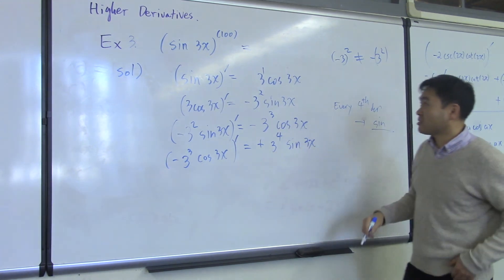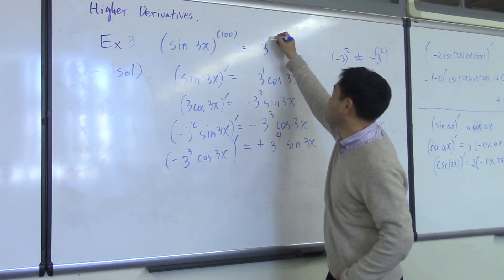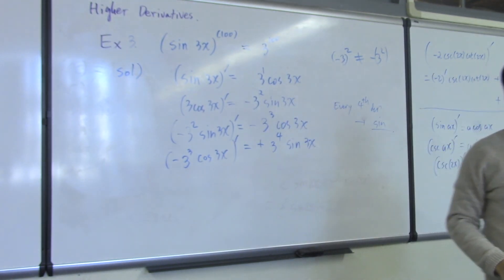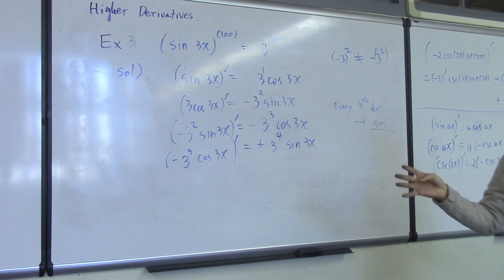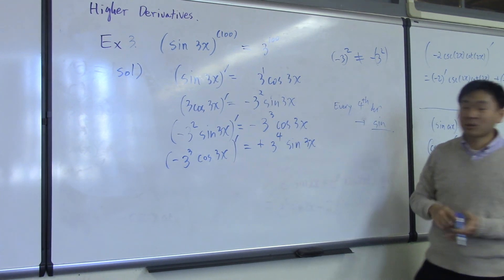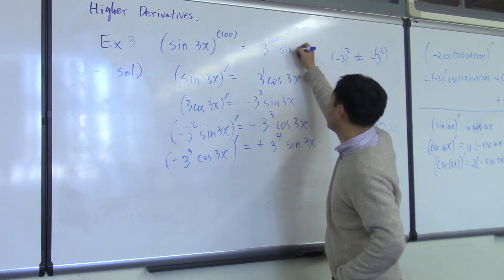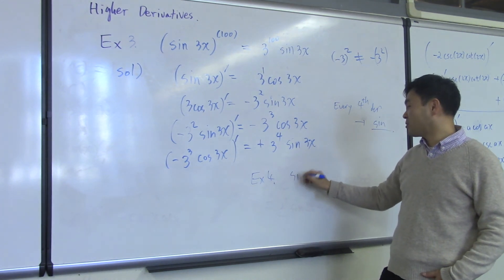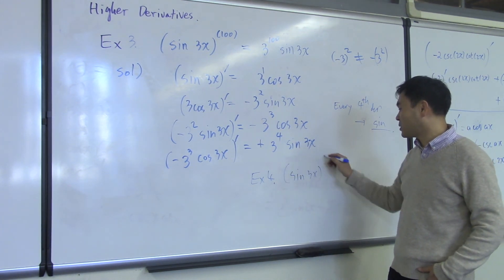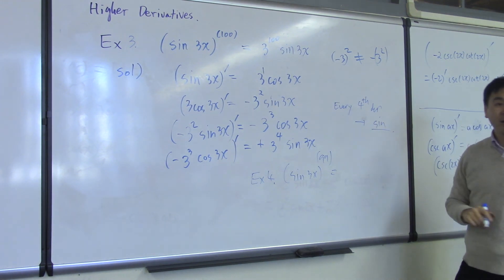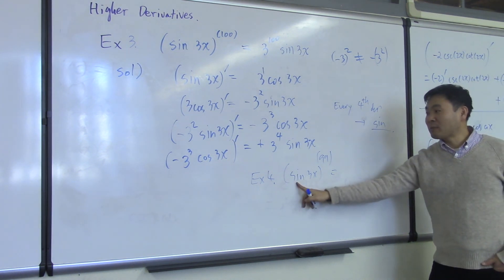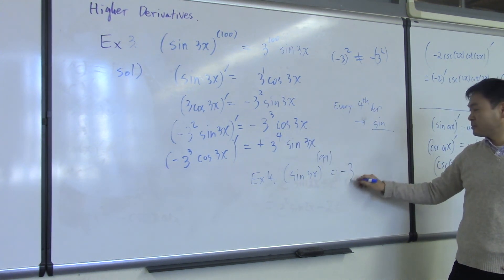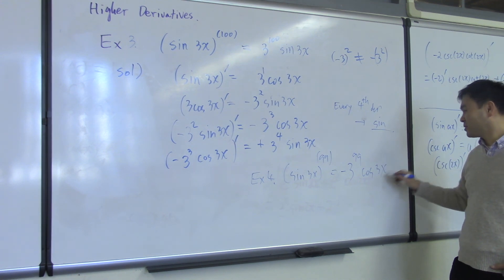3 to the 100th. Why is it sine? Because every 4 times you come back to sine, and 100 is 4 times 25, so it's a multiple of 4. So you come back to the sine. That would be the answer: 3 to the 100th times sine 3x. Now, what if you asked sine 3x to the 99th derivative? Right before sine is negative cosine, so the answer would be negative 3 to the 99th cosine 3x.